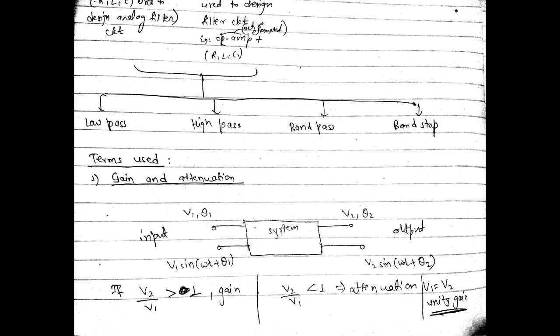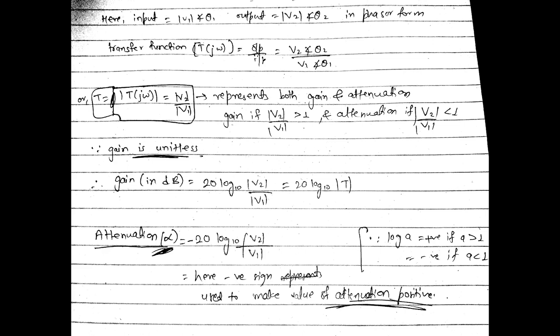If the magnitude of output upon magnitude of input (V2/V1) is greater than 1, it is called gain. If V2/V1 is less than 1, it is called attenuation. If V1 equals V2, it is called unity gain. As an engineer, you should know that the ratio of output upon input is known as the transfer function.